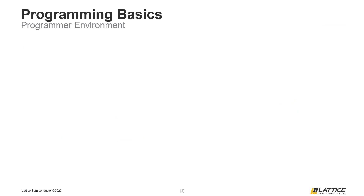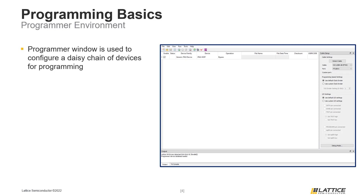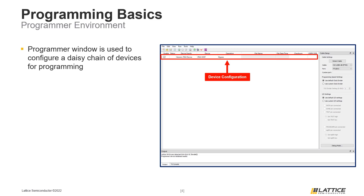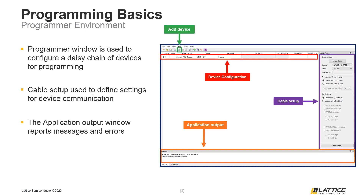Once the programmer tool has launched, a window similar to the figure on the slide will appear. This programmer window is what we will be using to program a device or a daisy chain of devices. Near the top of the programmer window is the section for configuring devices for programming. Each row corresponds to a device being programmed. By default, only the default selected device for a project will appear here; however, additional devices can be added using the Add Device button at the top of the window. On the side of the programmer window is the cable setup section, where users can configure the cable settings used for device programming.